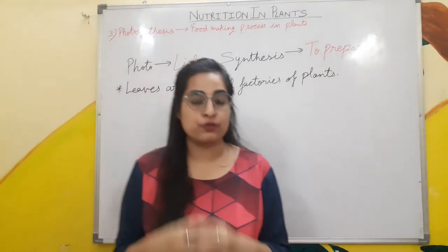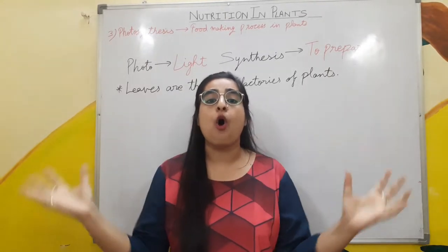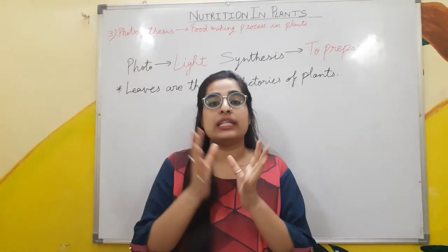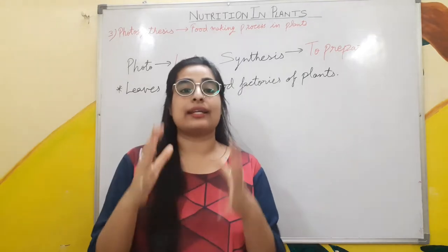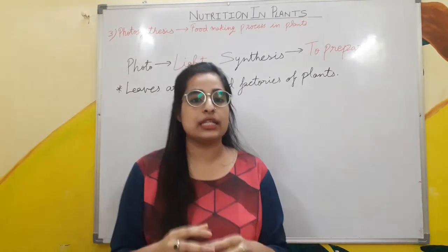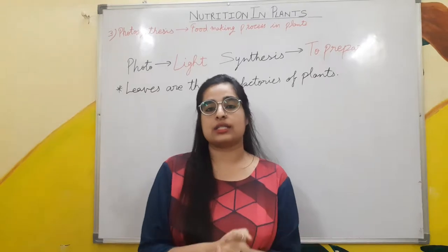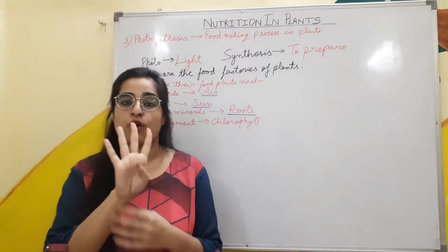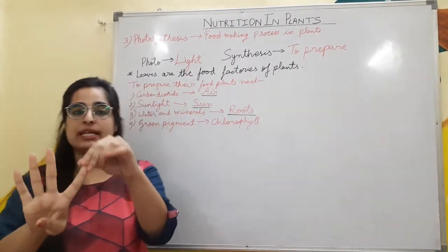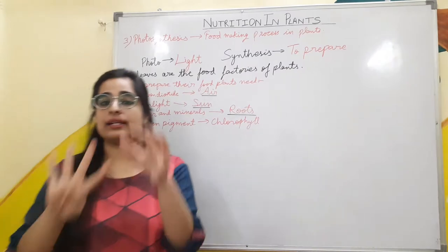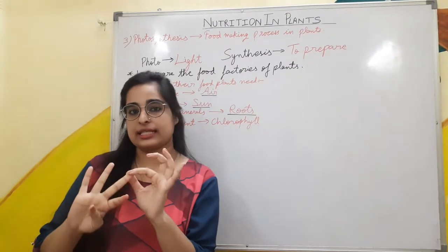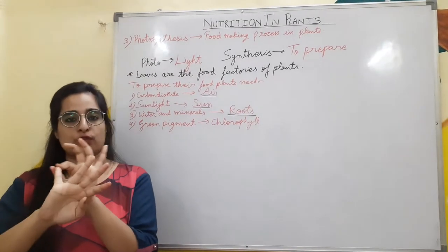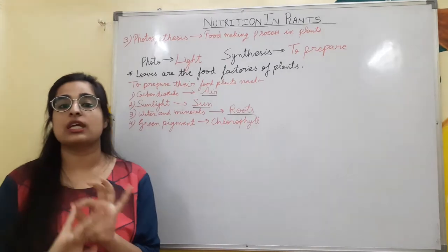When we have to prepare food, we gather all the raw materials which are known as ingredients. Leaves gather all the raw materials — the ingredients — which they need to prepare food for plants. Leaves need four things to prepare food: the first one is carbon dioxide and the second one is sunlight.